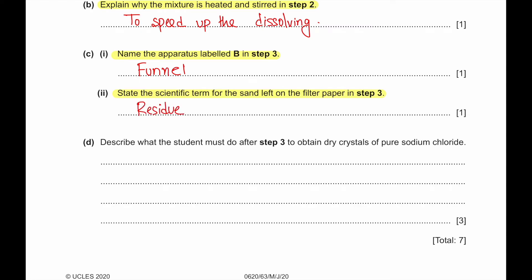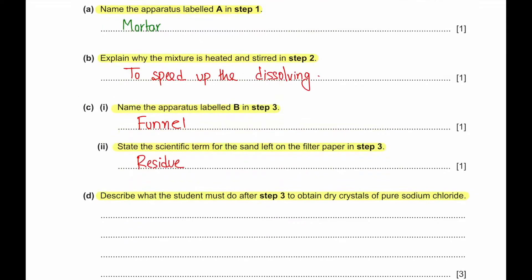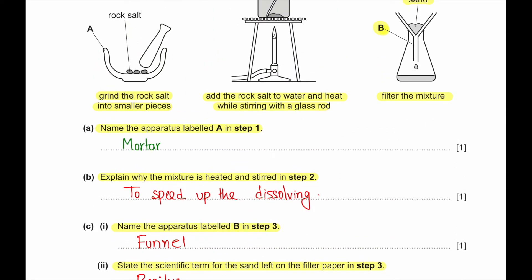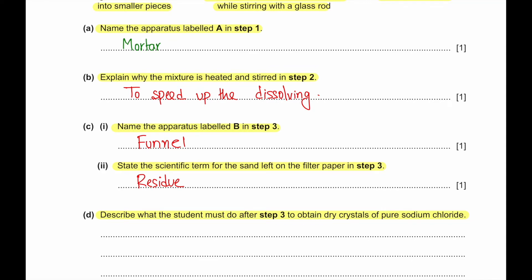Part D. Describe what the student must do after step three to obtain dry crystals of pure sodium chloride. The student can place the filtrate in an evaporating basin and then heat it to the point of crystallization. After that, the student can allow that concentrated solution to cool, and as a result, crystals of salt will form. Then the student can filter those crystals and dry them on a filter paper in an oven.